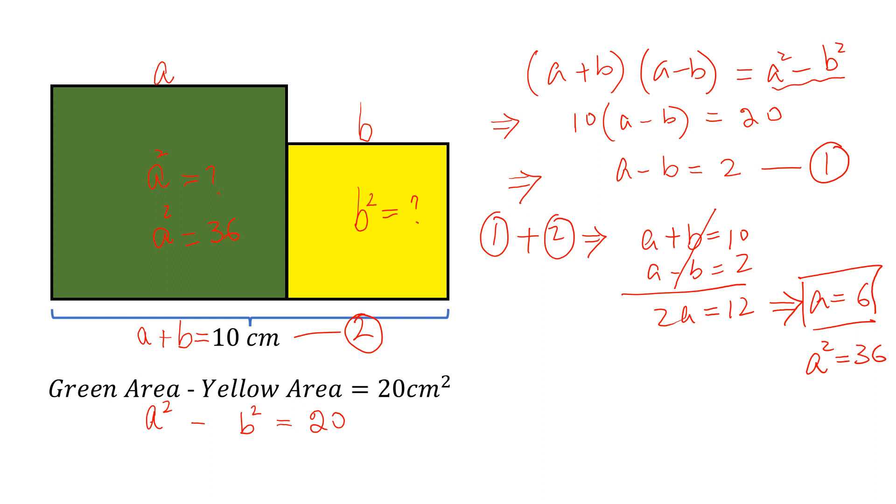Now we subtract the equations. Equation 1 minus equation 2: we can write A plus B equals 10, minus A minus B equals 2.